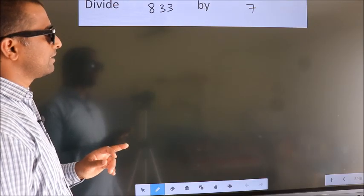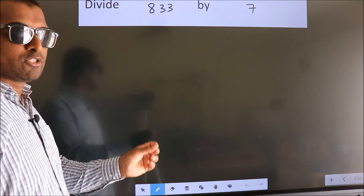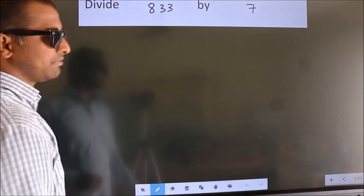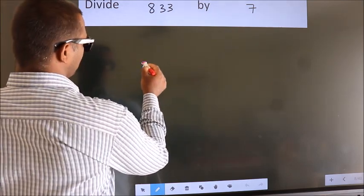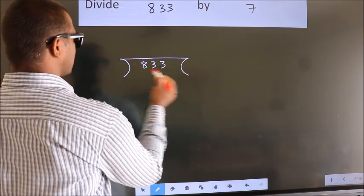Divide 833 by 7. To do this division, we should frame it in this way: 833 here, 7 here.